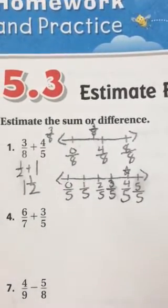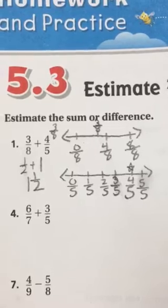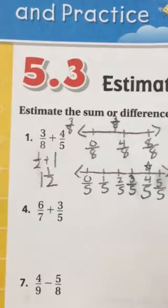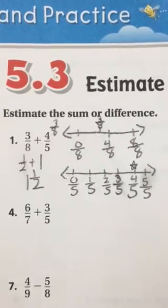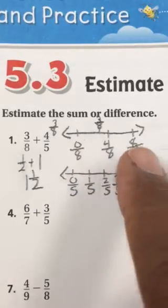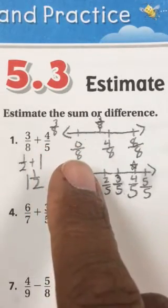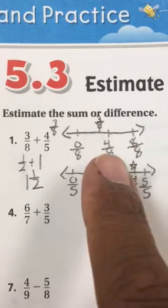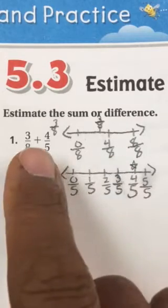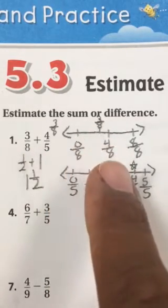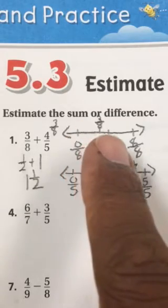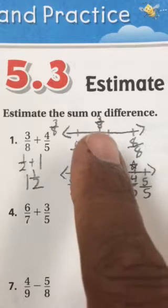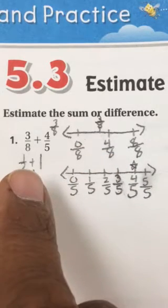We'll go ahead and take a look at number 1. So we have to do 3 eighths plus 4 fifths. If we use our number line, we have 0 over 8. That's 0. And then 8 over 8 is equal to 1 whole. So half of 8 is 4. So that's 4 over 8. So we have to figure out where does 3 eighths go on our number line. If this is 4 over 8, 3 eighths should be very close to that. So that tells us that 3 eighths is very close to 1 half. So that would be 1 half.